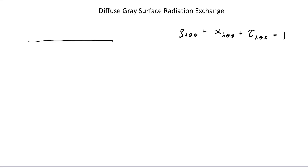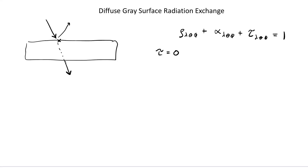We can sketch what's happening: we have our surface, light coming in, and it can be reflected, absorbed, or transmitted through the surface. We're normally going to be dealing with opaque surfaces, so for opaque surfaces τ equals zero at all wavelengths. It's usually not the case that a surface is opaque at all wavelengths — radio waves transfer through walls, and glass is opaque in the UV region, which is why you don't get sunburn through a window. We'll just make this assumption.